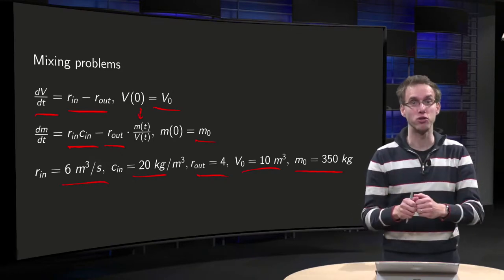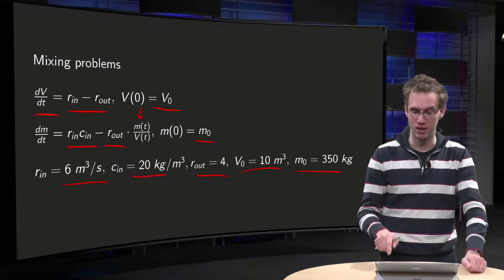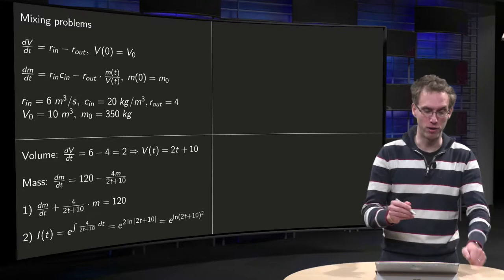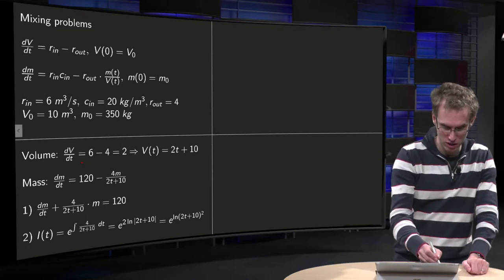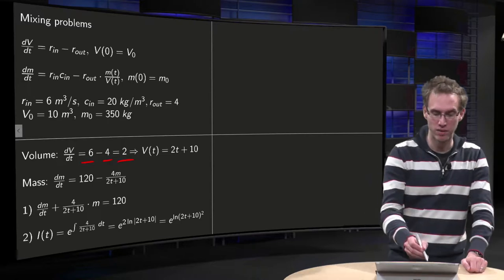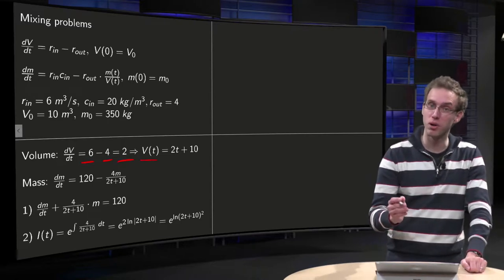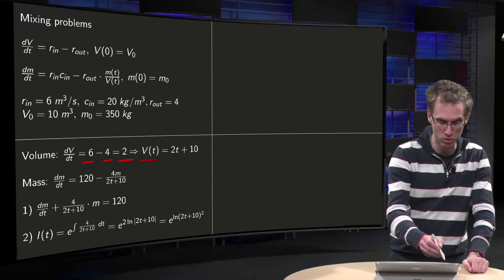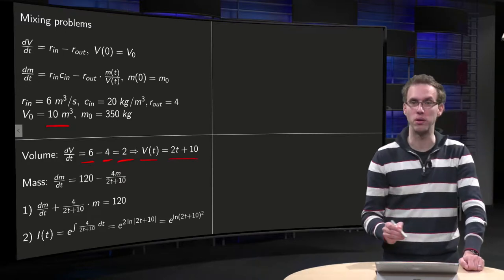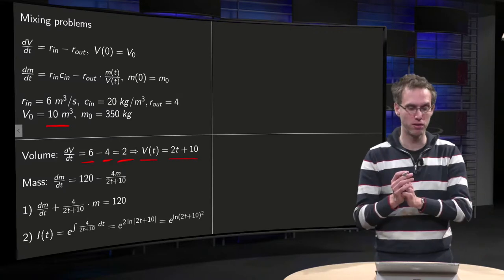What happens to amount of salt as a function of time? Let's see. First, the balance equation for the volume. dV/dt equals 6 in minus 4 out equals 2. We can integrate. We get V(t) equals 2t plus a constant. And we determine that constant using the initial volume of 10. So V(t) equals 2t plus 10. That's the volume.